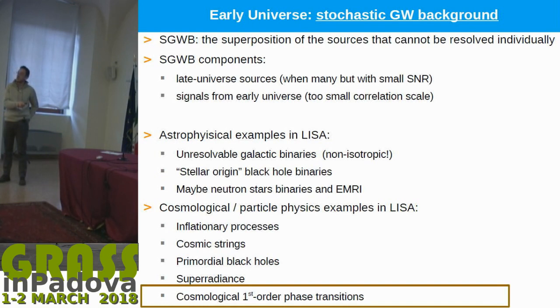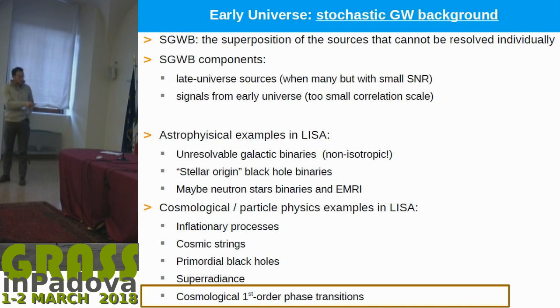Primordial black holes can also produce a stochastic background — they are tightly connected to inflation. Moreover, there is also superradiance: you may have a halo of non-standard model particles, such as axions, that also produce a stochastic background.